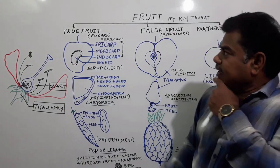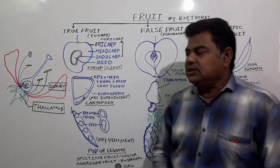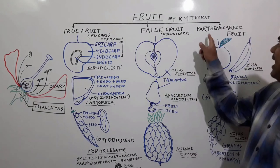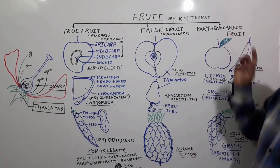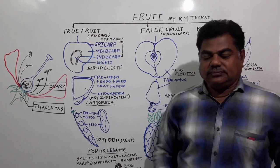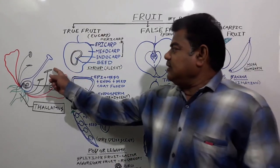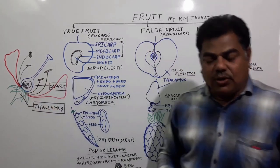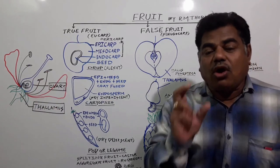Fruits are differentiated into three types: one is true fruits, second is false fruit, and third is parthenocarpic fruit. What is a true fruit? After pollination, fertilization takes place, and if fruit formation takes place from the ovary after fertilization, such a fruit we call a true fruit.